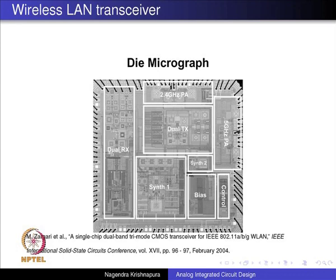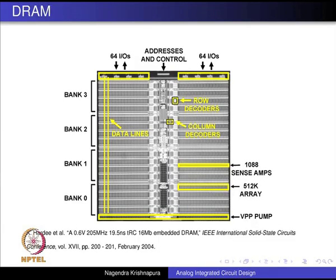Another example is a wireless LAN transceiver — what would be inside your laptop's wireless LAN chip. It contains a number of blocks, each denoting a different analog circuit: high-frequency power amplifiers, a frequency synthesizer that generates the carrier frequency very precisely, and bias circuitry. Yet another example is a DRAM, which we mostly think of as digital, but it contains I/O circuits, decoders, and sense amplifiers that form analog circuitry.